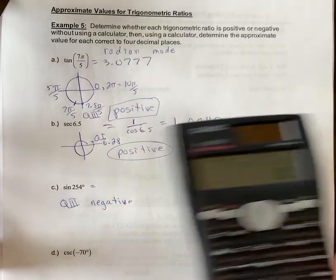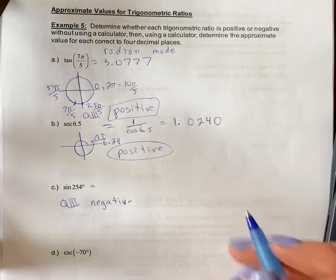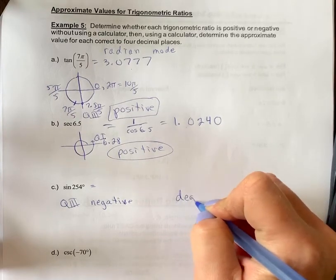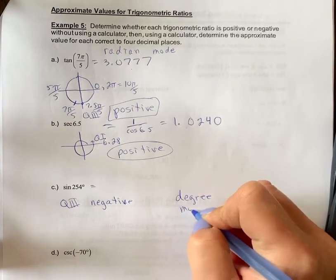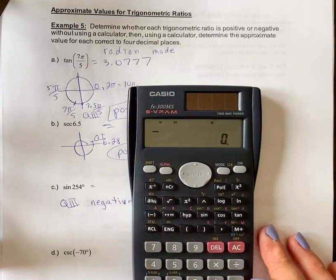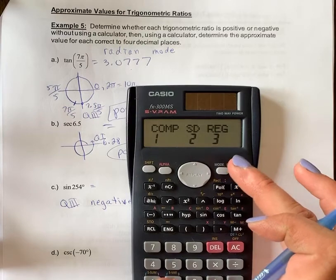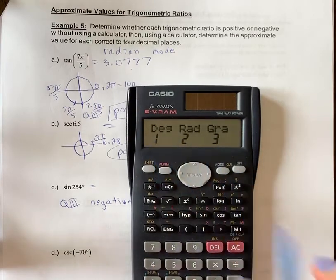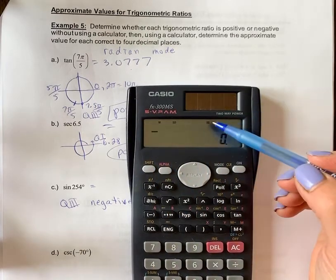So we're going to put this into our calculator. Now it's important that you're back in degree mode. Everyone's calculator might be different. You've had to learn how to convert your modes now. For mine I have to hit mode twice and then I see degree, so that's option one.